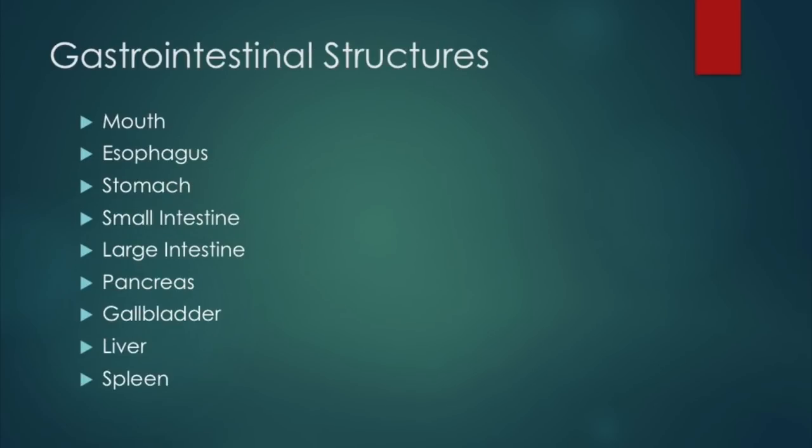Starting with some gastrointestinal structures, we have the mouth, esophagus, stomach, small intestine, large intestine, the pancreas, the gallbladder, and the liver and spleen.